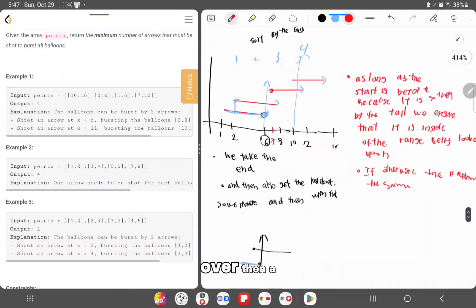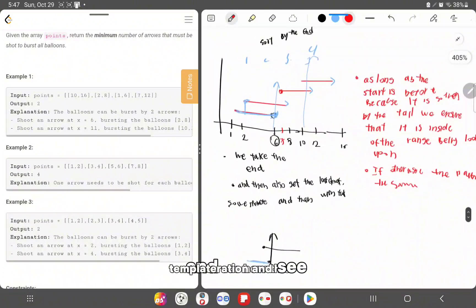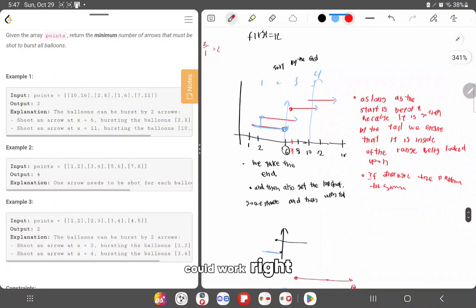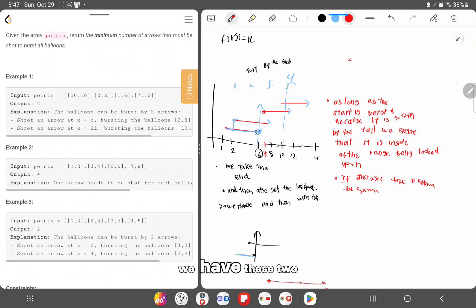Go over then a template iteration and see how this will work. We have these two conditions. So first we sort them by the end. And then we save up the current range, which will be the first balloon.